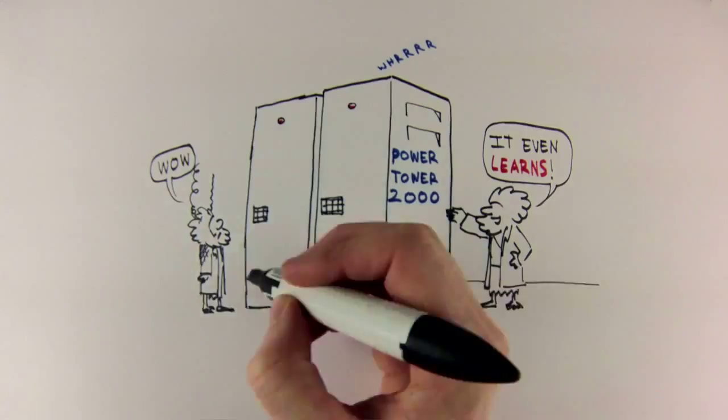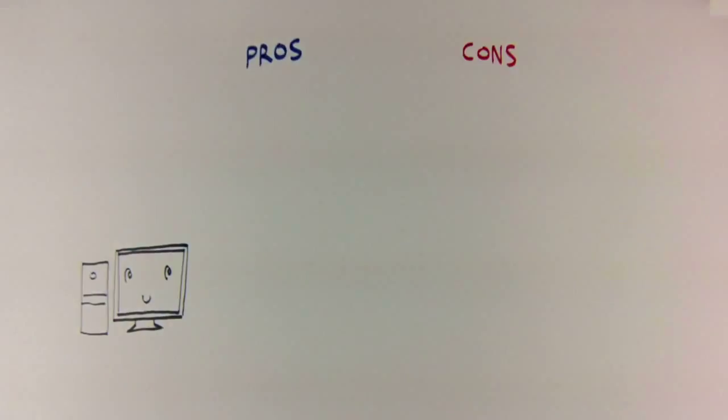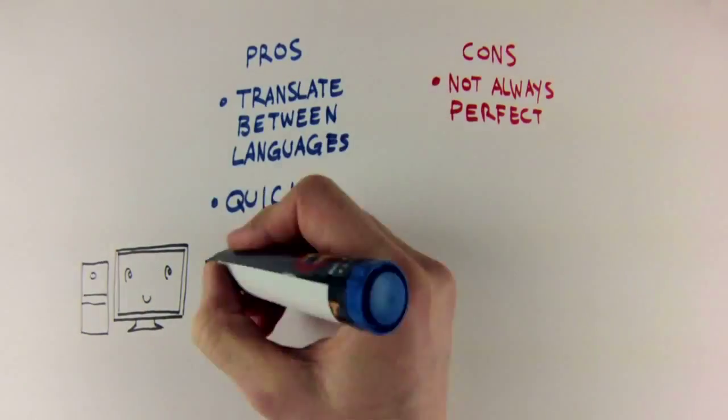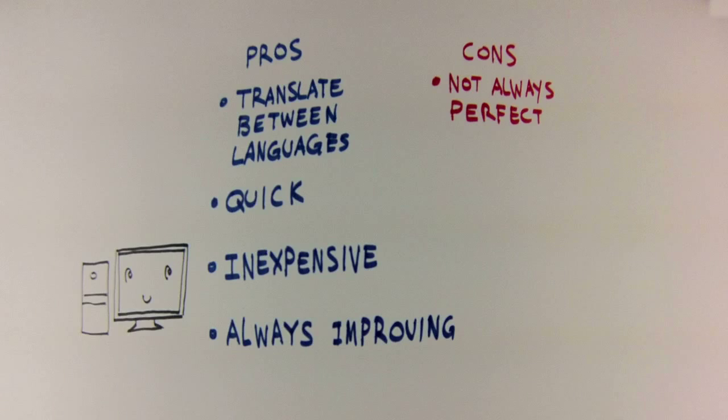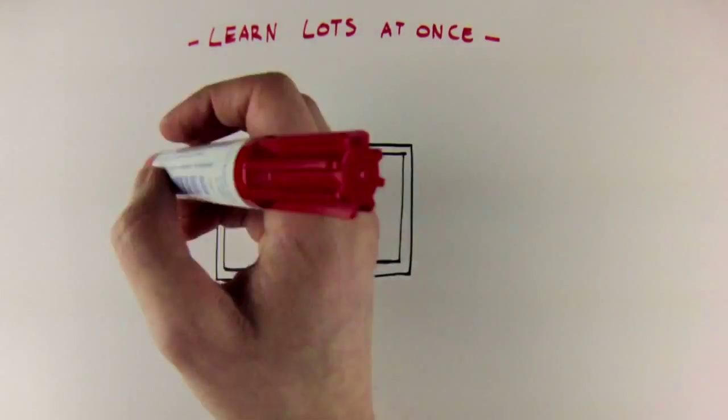These systems, like us at school, don't always produce perfect translations, but they're quick, inexpensive to run, and, unlike some of us at school, they're eager to learn more and improve once they're given the right data. What's more, they can learn lots of languages all at once.